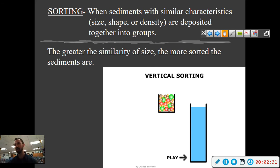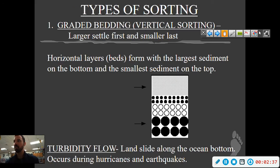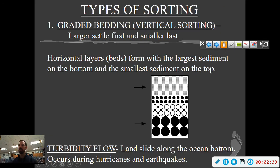That's this type of sorting, vertical sorting. Where does this happen? This is a type of graded bedding. Vertical sorting means that larger particles settle first, then smaller. So it's basically large, medium, small. This sometimes can repeat over and over again—large, medium, small—on top of each other.